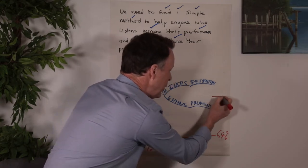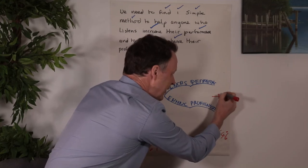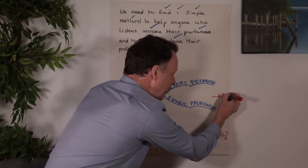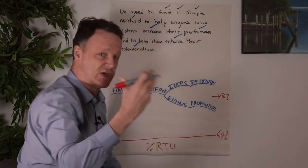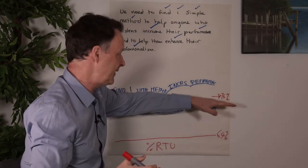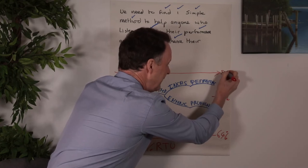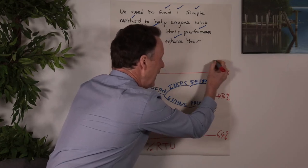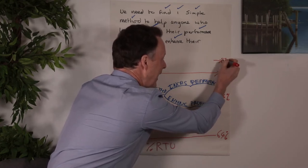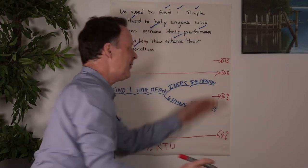Within two weeks of switching to next generation note taking, your real time understanding, because you're challenging your thinking all the time, jumps to 76%. After one year, it jumps again to 84%. And if you're dyslexic, which I am, 87%.